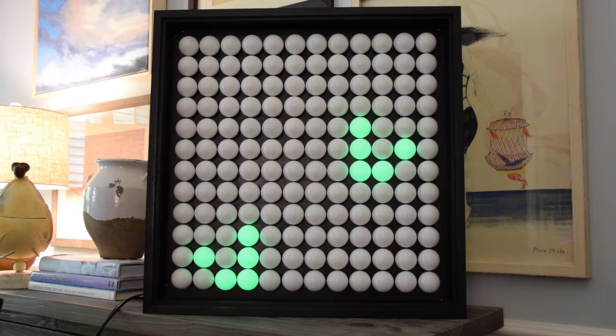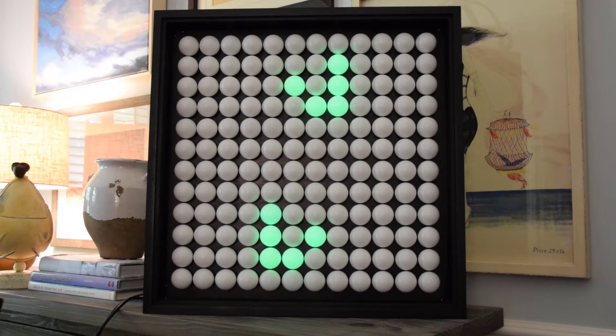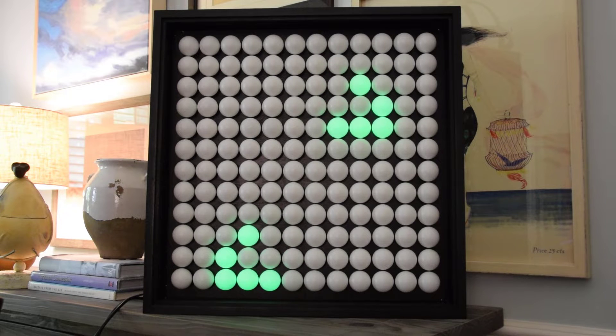Here we see Conway's Game of Life represented on a 12 by 12 array of ping-pong balls, where each ping-pong ball has a tri-colored LED in it. We have two of the glider shapes which transition their way across the array.